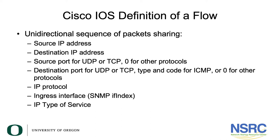Cisco IOS's definition of a flow is a unidirectional sequence of packets sharing the same source IP address, same destination IP address, source port for UDP or TCP (and zero for other protocols), destination port for UDP or TCP, type and code for ICMP (or zero for other protocols), the same IP protocol, the same ingress interface, and the same IP type of service.